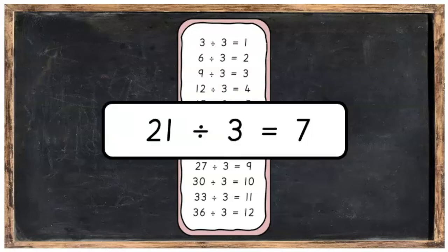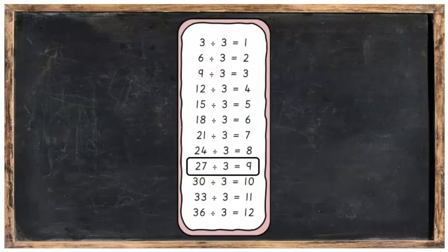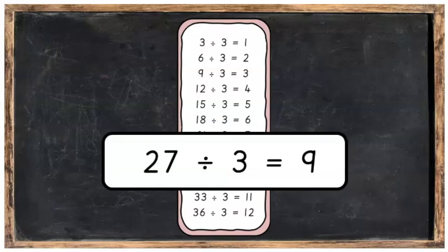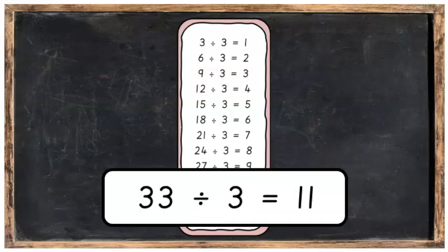Three into twenty-one goes seven times. Well done! Three into twenty-four goes eight times. Three into twenty-seven goes nine times. Three into thirty goes ten times. Three into thirty-three goes eleven times.